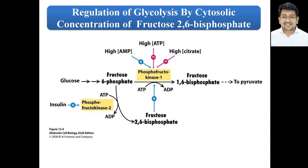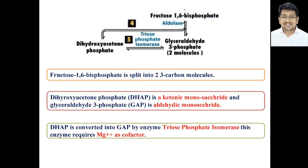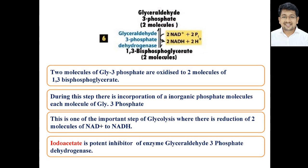The next step is conversion of fructose-1,6-bisphosphate into two three-carbon molecules: dihydroxyacetone phosphate and glyceraldehyde-3-phosphate, carried out by the enzyme aldolase. Aldolase splits fructose-1,6-bisphosphate into dihydroxyacetone phosphate (a ketonic sugar) and glyceraldehyde-3-phosphate (an aldehydic sugar). Then dihydroxyacetone phosphate is converted into glyceraldehyde-3-phosphate by the enzyme triose phosphate isomerase, which requires Mg²⁺ as a cofactor.